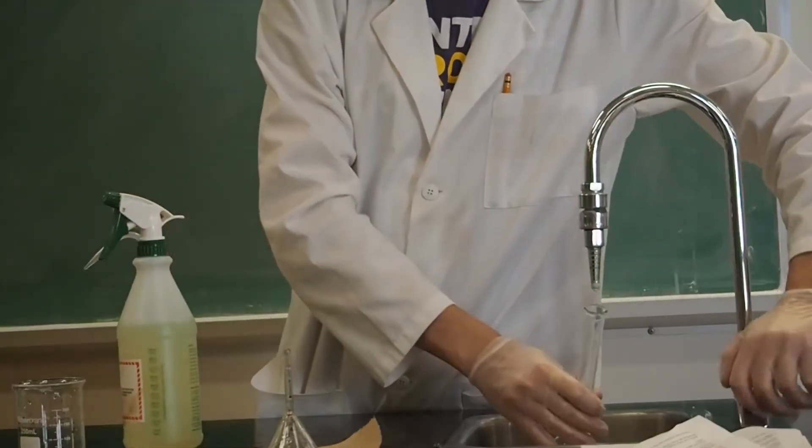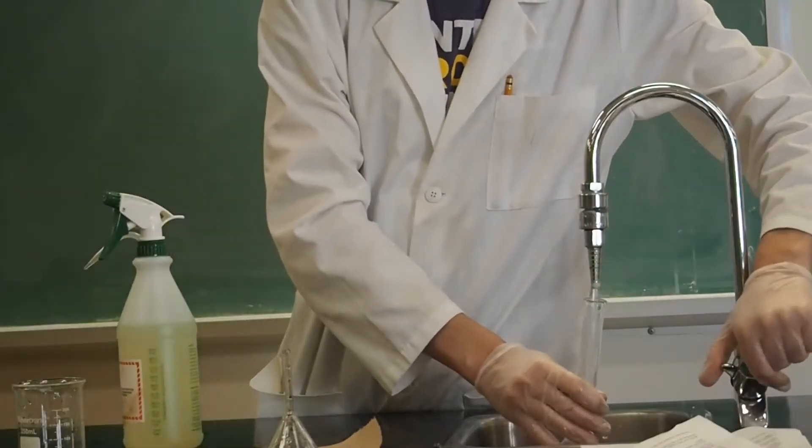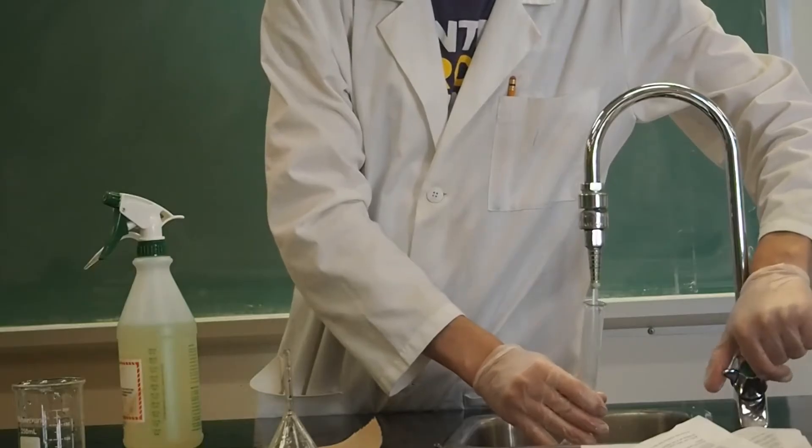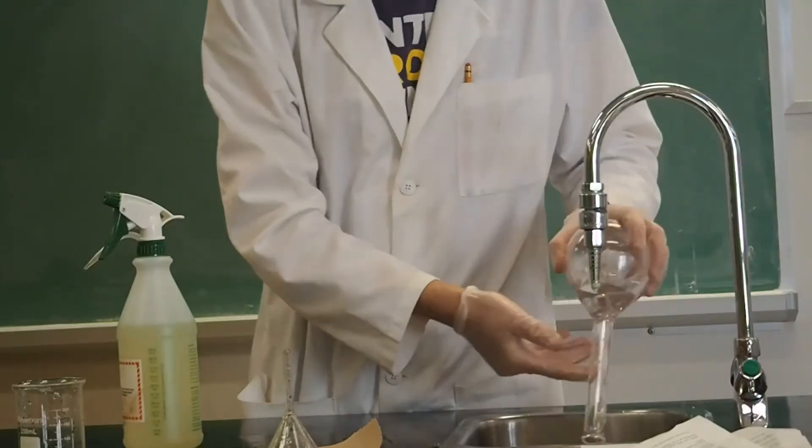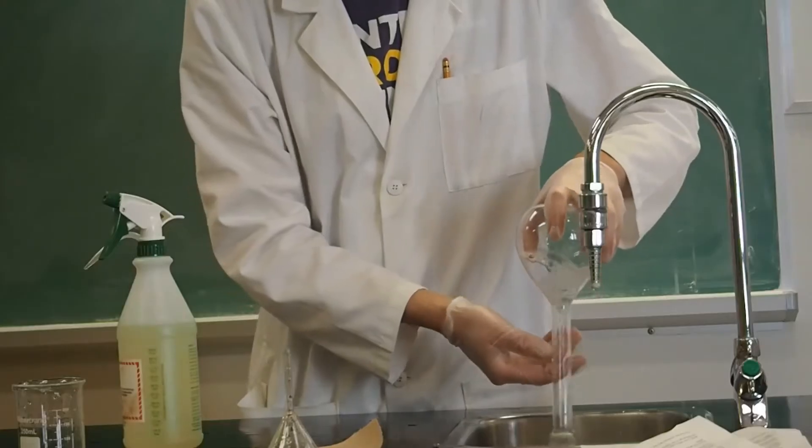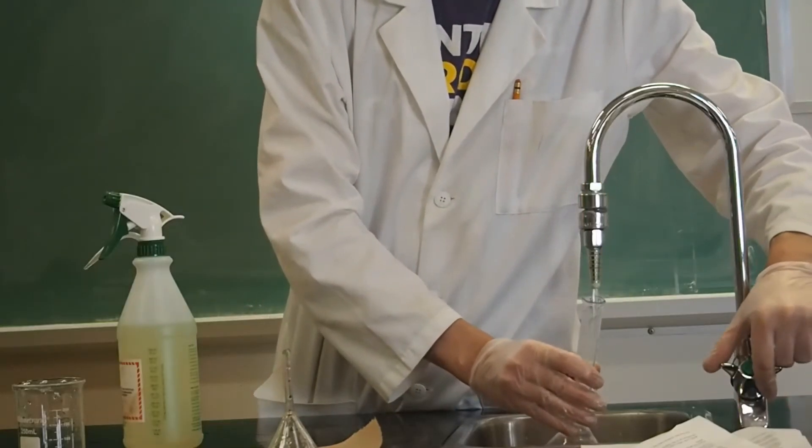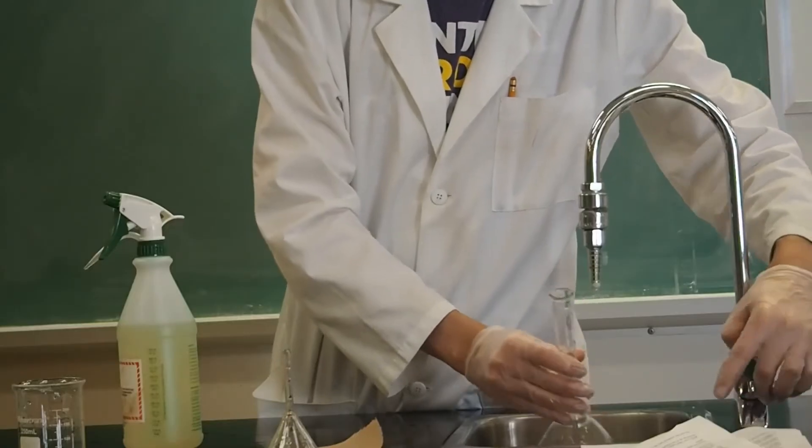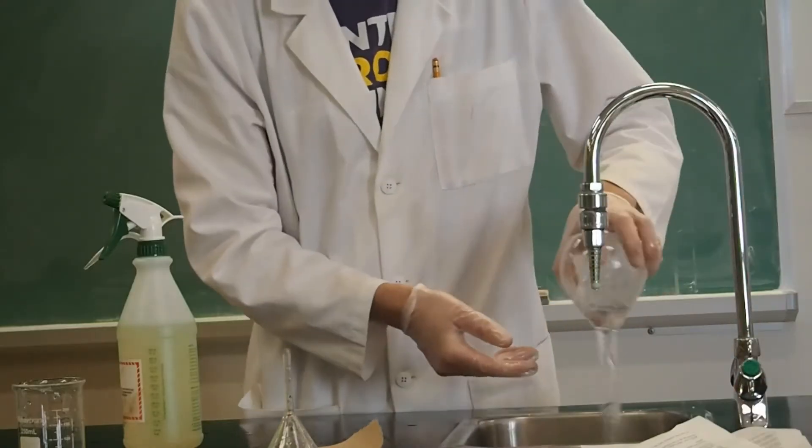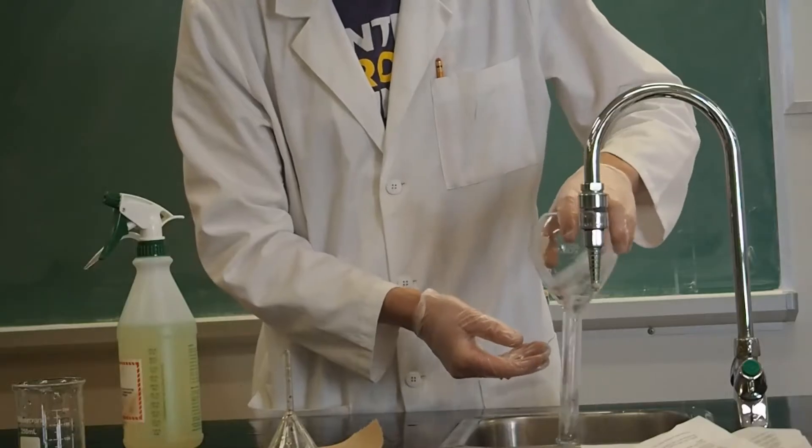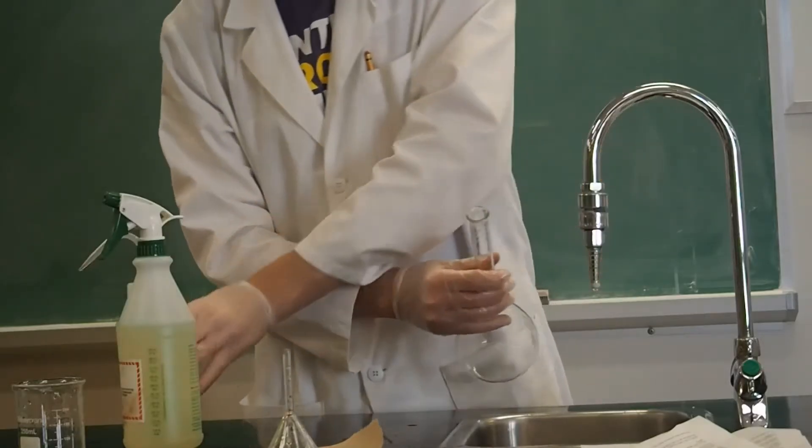Be sure to turn the glassware as you rinse so that all sides of the glassware are rinsed well. As you pour the deionized water out, turn the glassware so that all sides are rinsed again. These rinses ensure that all ions that were present in tap water are rinsed away.